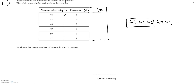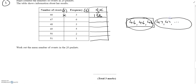So 46 times 3 is 138 — that's what those three numbers add up to. Similarly, there are six lots of 47, so 6 times 47 gives us 282, the total number of sweets in those six packets. Carrying on: 3 times 48 is 144; 5 times 49 is 245; 50 times 2 is 100; and 51 times 1 is 51.